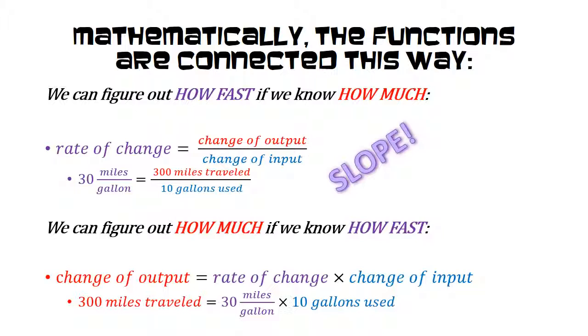Again, we can figure that our car is going to go 300 miles if we have a rate of change of 30 miles per gallon and we're using an input of 10 gallons.